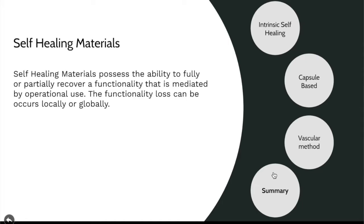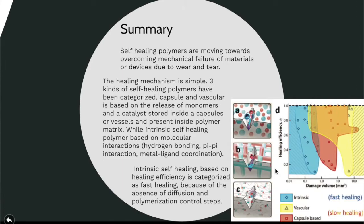In summary, the healing mechanism for capsule-based and vascular systems is based on the release of monomers and sometimes catalysts stored inside capsules, which then polymerize to self-heal the system. Intrinsic self-healing is based on molecular interactions such as hydrogen bonding, pi-pi interactions, and metal-ligand coordinations, depending on the material.